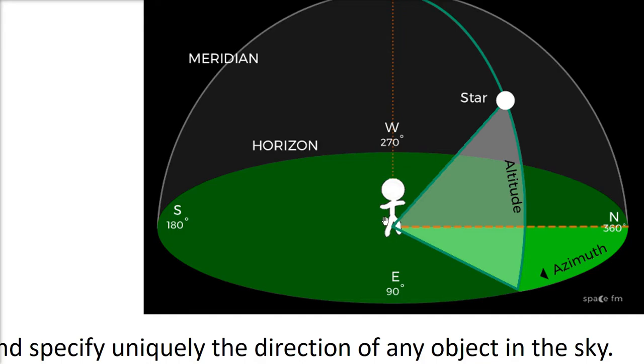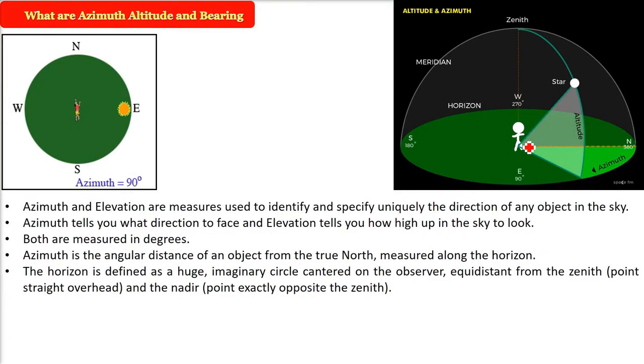It is a circular shape or circular plane with you at the center. This is defined as a huge imaginary circle centered on the observer, equidistant from the zenith, which is the highest point, and the nadir, which is the lowest point. Right above you is zenith, right below you is nadir.